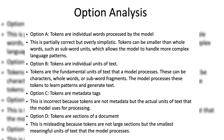Option B: tokens are individual units of text. Tokens are the fundamental units of text that a model processes. These can be characters, whole words, or sub-word fragments, depending on the tokenization method used. The model converts input text into tokens, processes them to learn patterns, and generates output by predicting the next token in the sequence.